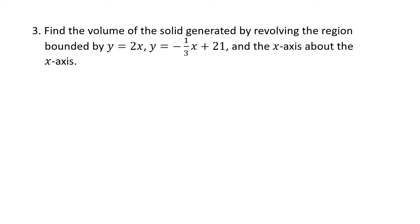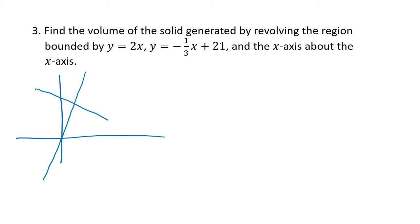Now we have a few functions bounding the region. The volume of the solid is generated by revolving the region bounded by y equals 2x, y equals negative one-third x plus 21, and the x-axis, then revolving about the x-axis. y equals 2x is a line with slope 2 through the origin, and negative one-third x plus 21 has slope negative one-third and y-intercept 21. Those two lines and the x-axis bound a triangular area. Because the rectangles on the left have y equals 2x on top while those on the right have y equals negative one-third x plus 21 on top, we'll need to break this into two separate integrals.